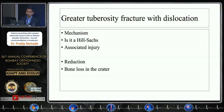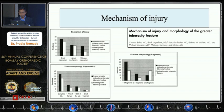When the fracture is associated with dislocation, we need to understand the mechanism of injury — whether it is a Hill-Sachs injury. Several articles correlate this to Hill-Sachs injury, where the glenoid acts as a wedge creating the initial fracture line and the rotator cuff then completes it. Associated injuries and management issues include when to perform reduction and how to address bone loss in the crater of these fractures.